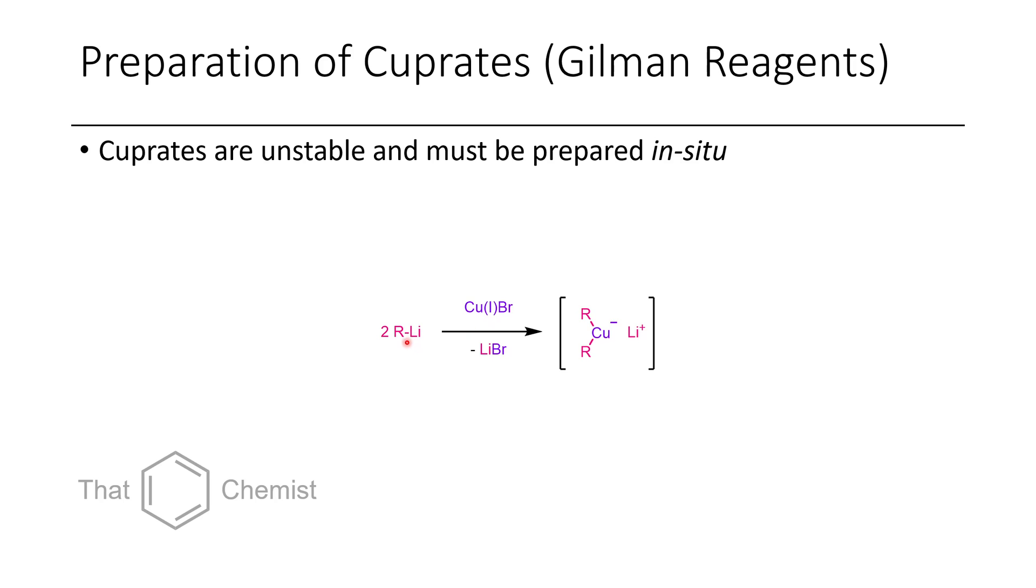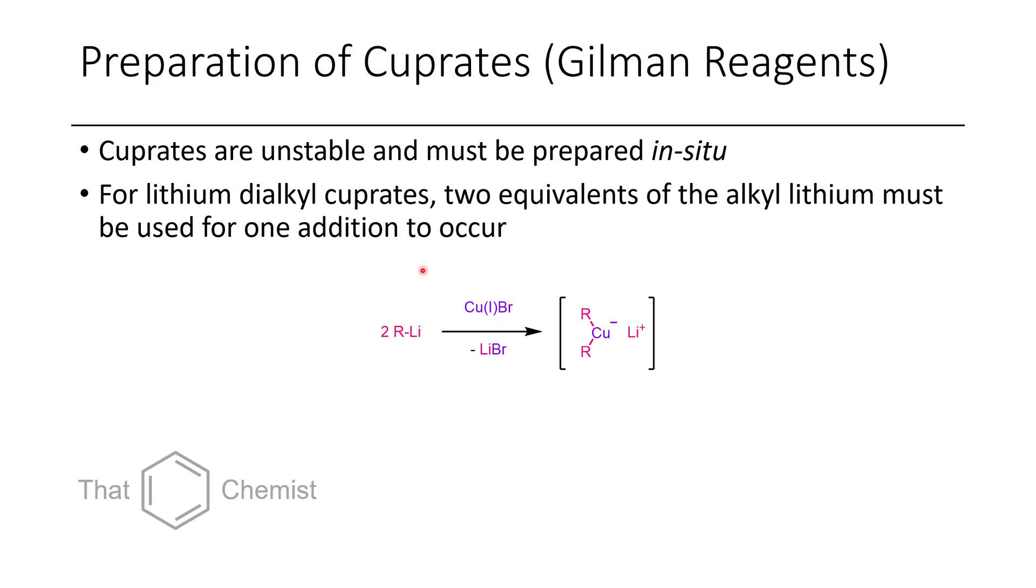So when you take two equivalents of an alkyl lithium species in the presence of a copper-1 salt, you'll form a dialkyl cuprate. Now what you might notice is we're having to waste two equivalents of our R group just to get one equivalent of our reagent, which is the downside to cuprates. Some people have created ligands for copper to prevent this, but for the most part people just bite the bullet and do it this way anyway.